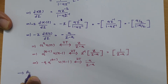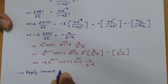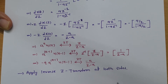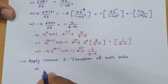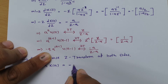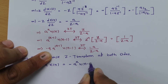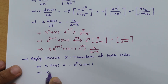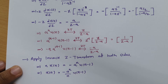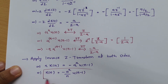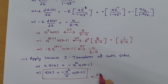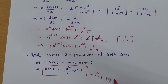Applying the inverse z-transform to both sides, we get n·x(n) = -a·aⁿ⁻¹·u(n-1). Note that -a·aⁿ⁻¹ = -aⁿ, so n·x(n) = -aⁿ·u(n-1), which gives x(n) = -aⁿ/n · u(n-1). This is the original signal obtained from the inverse z-transform of log(1 - az⁻¹).